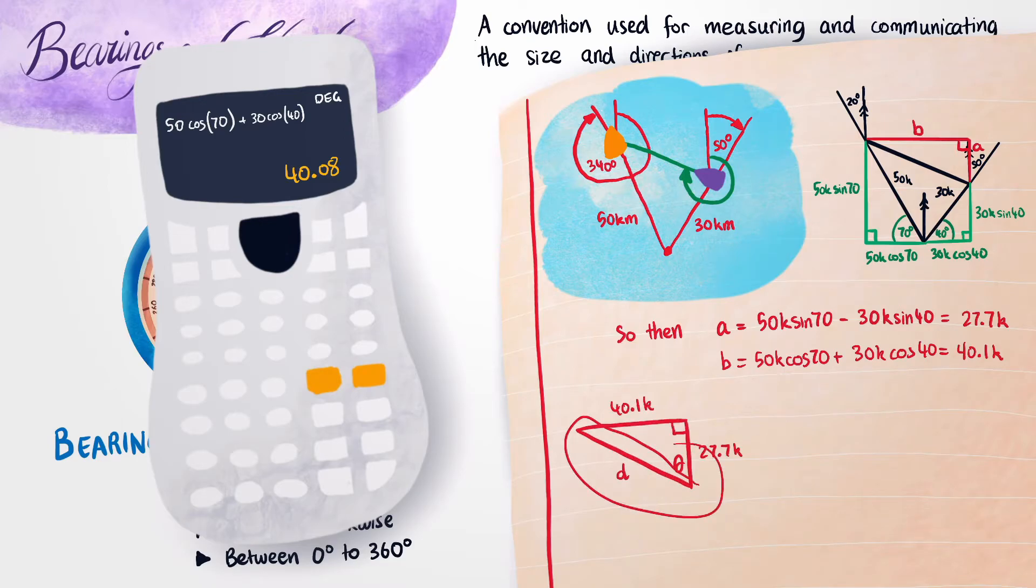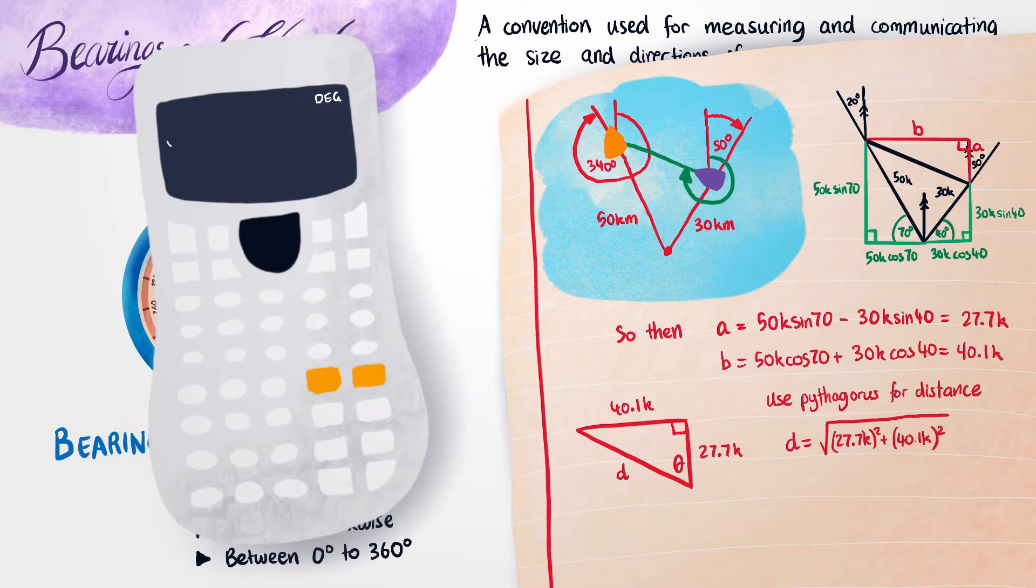To solve for the distance between the two boats, we can just go ahead and use Pythagoras' theorem. Now we can just use the tan of theta to find this angle over here. I didn't write the K's because they just cross out anyway. Now if we take the arctan of both sides, we can actually go ahead and find the angle as well.